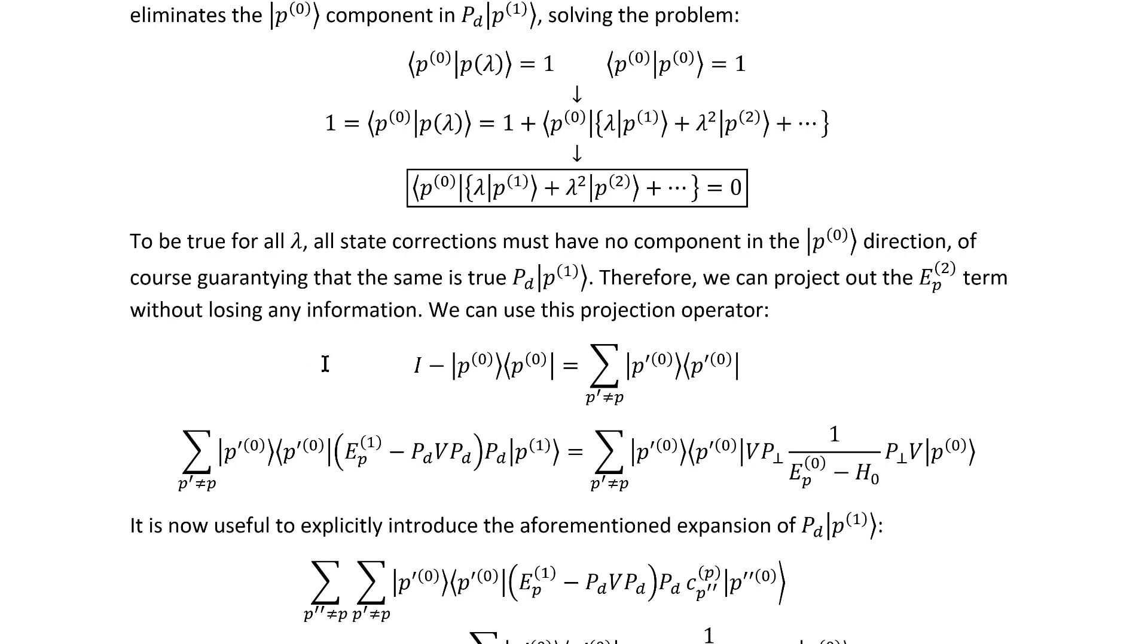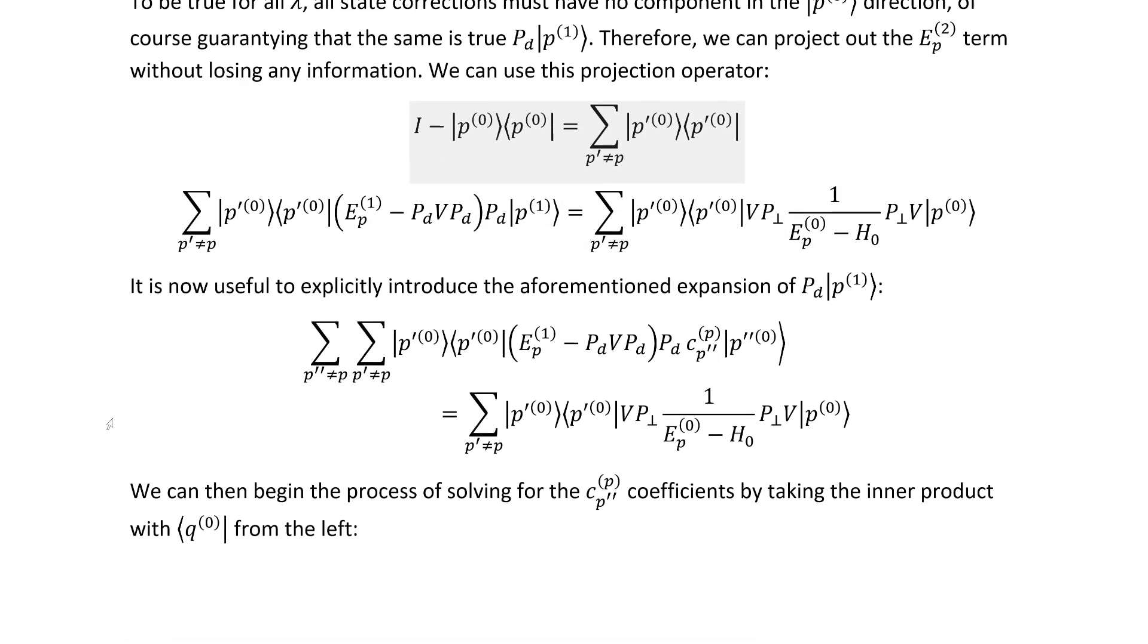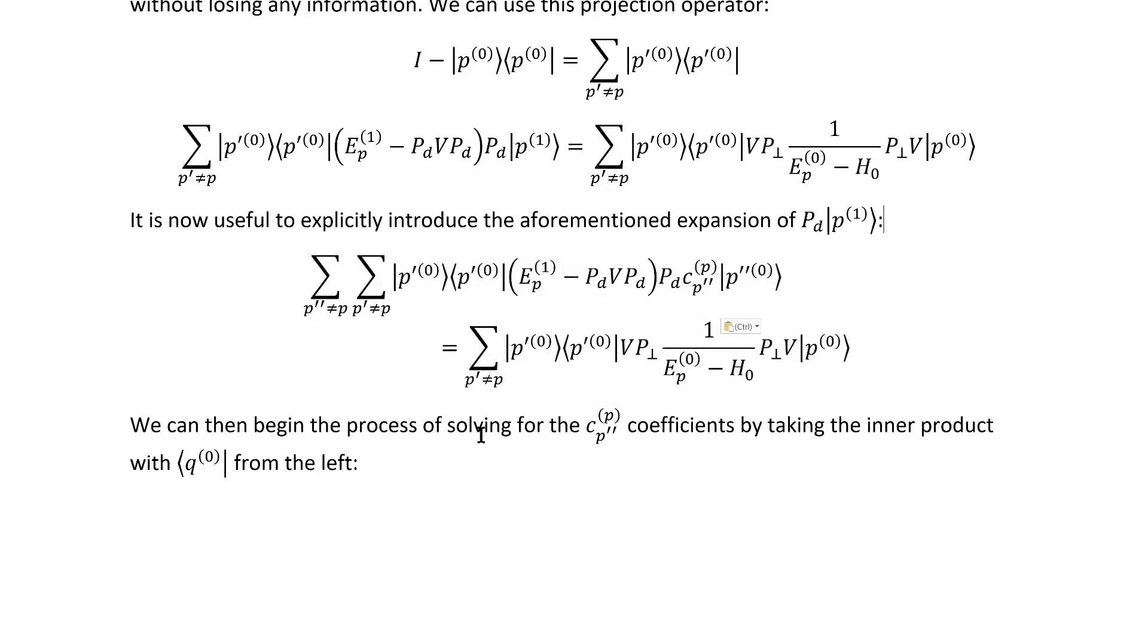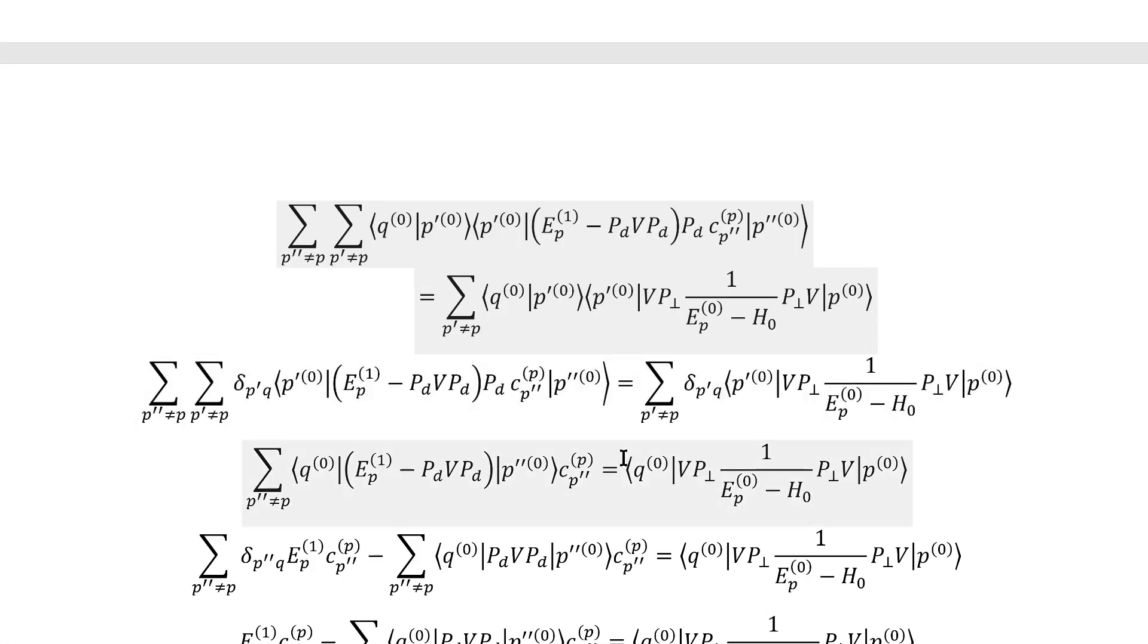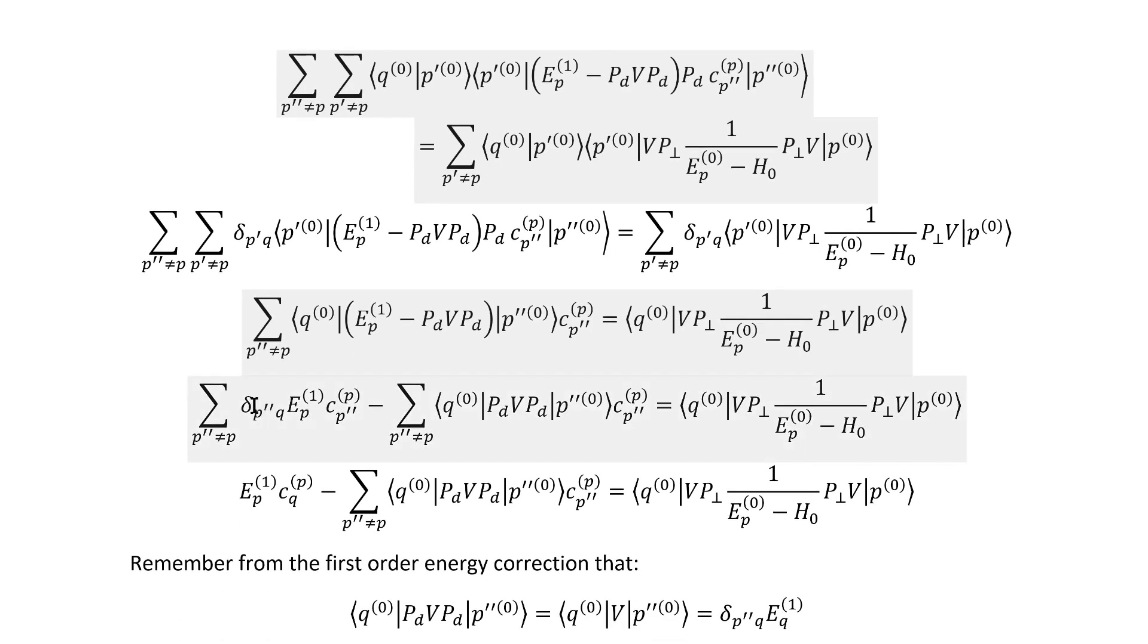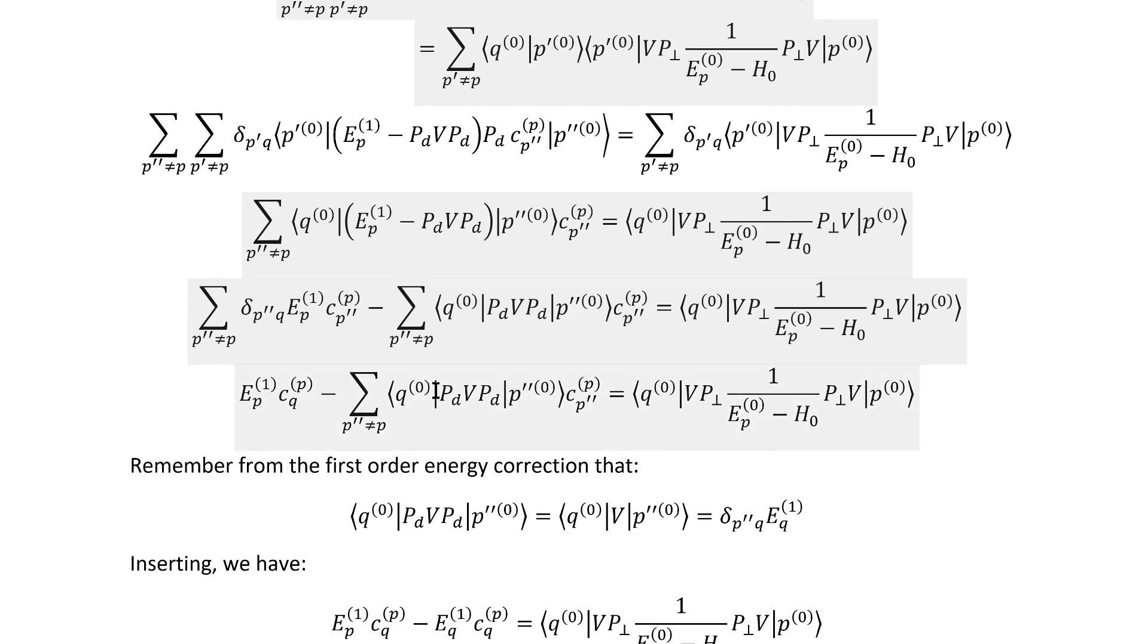Therefore, we can project out that E2 term without losing any information. The projection operator we need is no surprise. Applying it gets us this equation. If we now explicitly introduce the aforementioned expansion of this quantity in terms of the unperturbed states, we arrive immediately here. We can then solve for these coefficients by taking an inner product from the left with more unperturbed states, again in the correct basis rather than the initial basis. That leaves us with this equation. We get this Kronecker delta and this other Kronecker delta, which allows us to do one sum on each side, leaving us with something that looks a lot easier to handle. If we distribute the sum through, we arrive at a term where we have another Kronecker delta, which allows us to do the only sum remaining in that one. However, this term looks a bit more complicated, but that's actually deceptive because, remember, these projection operators just disappear given that we're in the degenerate subspace with these two states, and we end up with this quantity here.